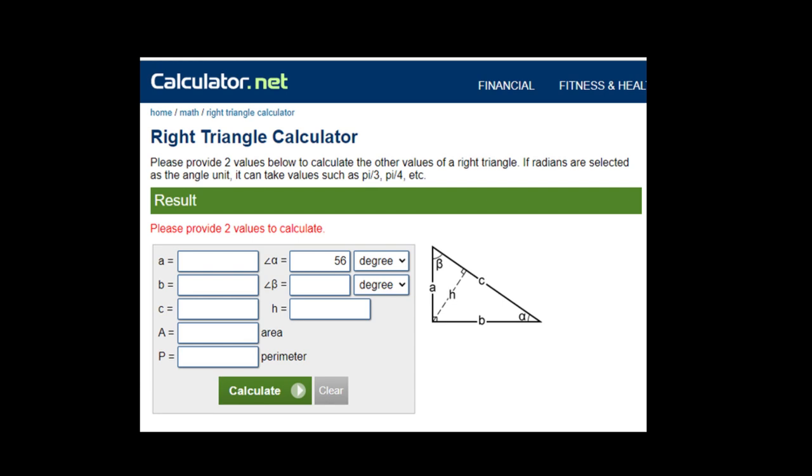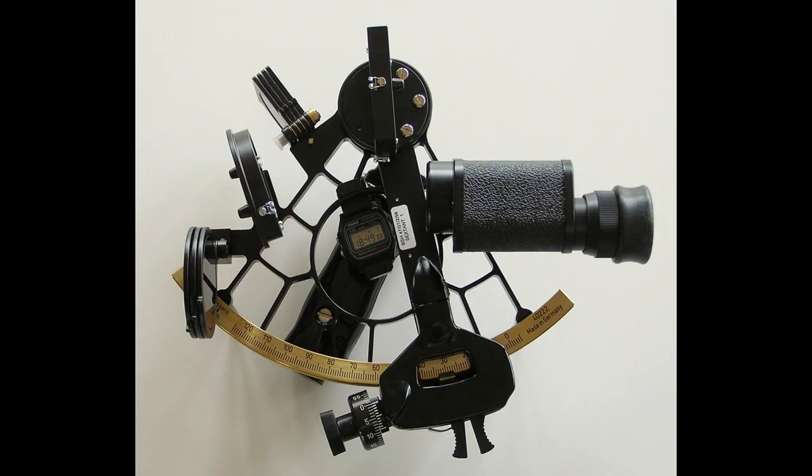Since trigonometry cannot provide for any formula to calculate the length of a side of a triangle with the input of only one value, you have no distance to the GP. You need the distance to the GP and since you cannot calculate it on a flat earth, you cannot navigate with the sextant on a flat earth.